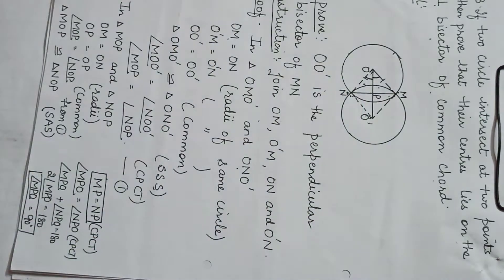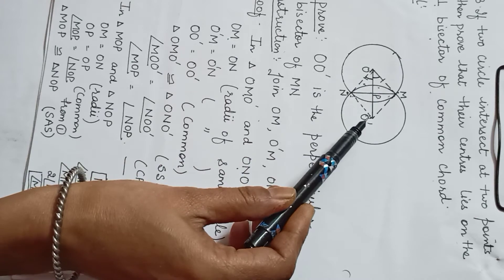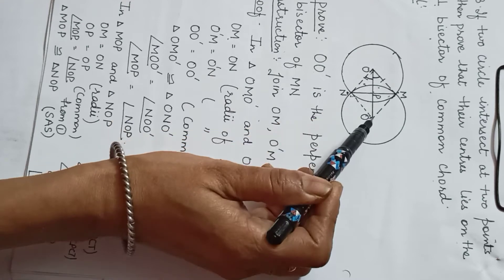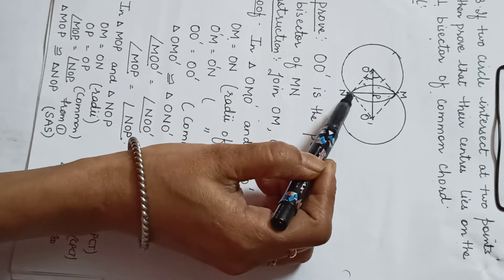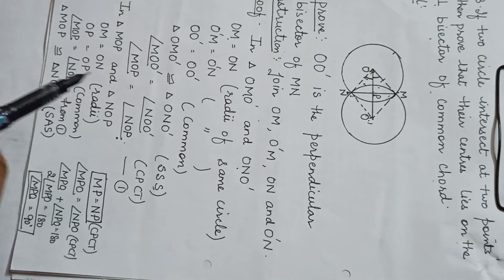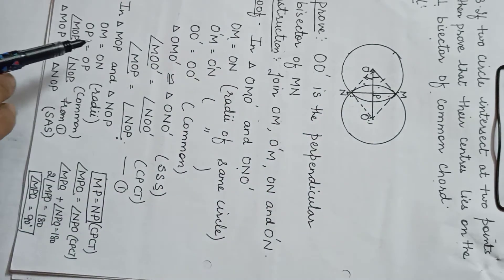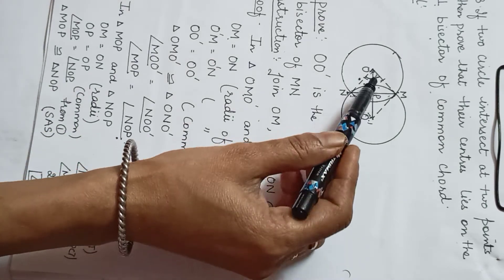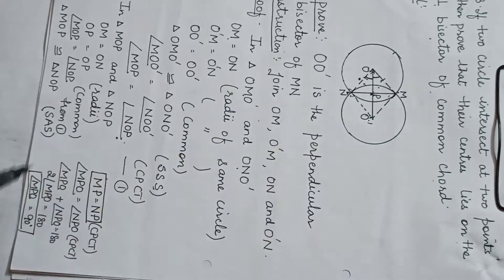Since the triangles are congruent, angle MOO' equals NOO'. Since P lies on the line OO', we can write angle MOO' as MOP and angle NOO' as NOP. So angle MOP equals angle NOP — give this equation number 1. Now we prove triangle MOP congruent to triangle NOP. In triangles MOP and NOP: OM equals ON — radii of the same circle — and OP is common, and angle MOP equals angle NOP from equation 1.